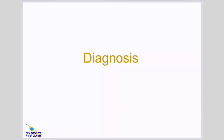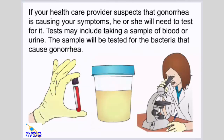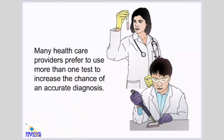Diagnosis. If you have the symptoms of gonorrhea, your healthcare provider will perform a physical exam and review your patient medical history. He or she may ask you about your sexual activities over the last several months, and it is important to be honest. If gonorrhea is suspected, tests may include taking a sample of blood or urine to test for the bacteria. Many healthcare providers prefer to use more than one test to increase the chance of an accurate diagnosis.